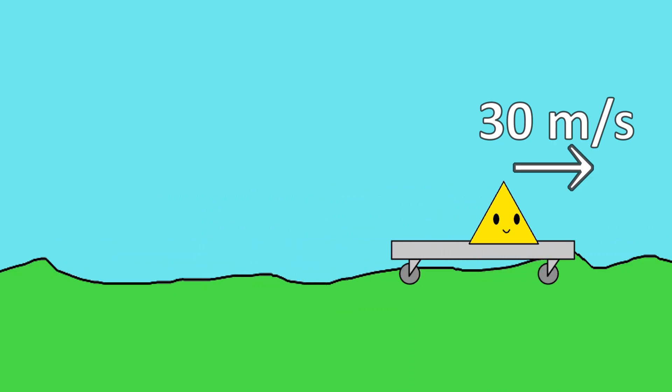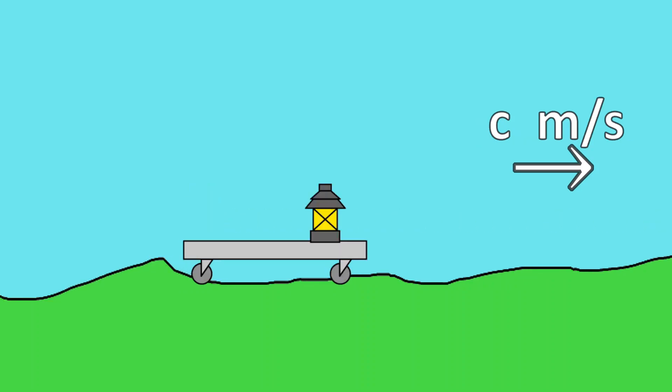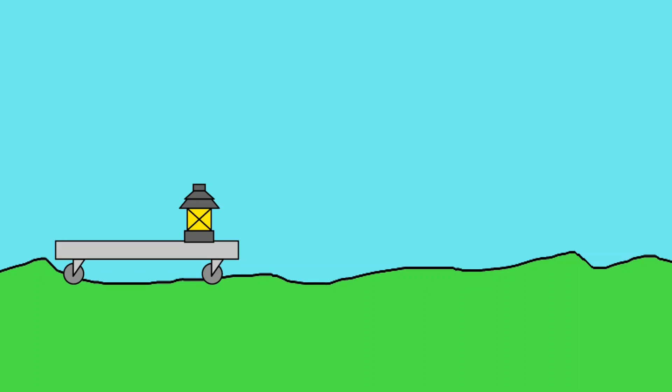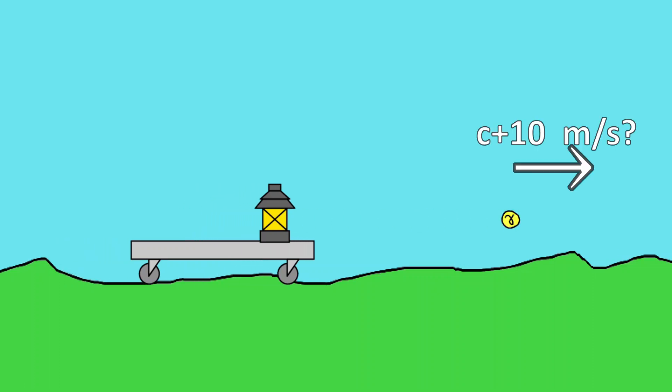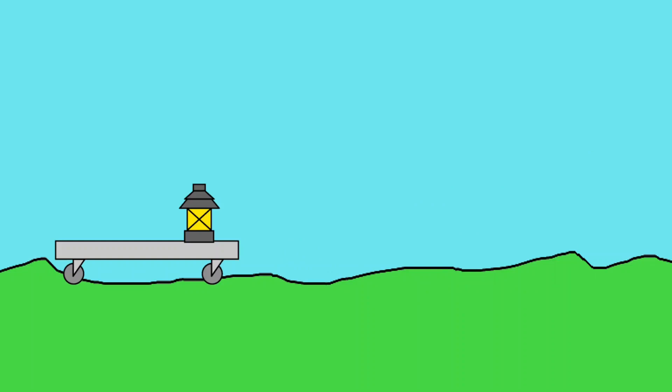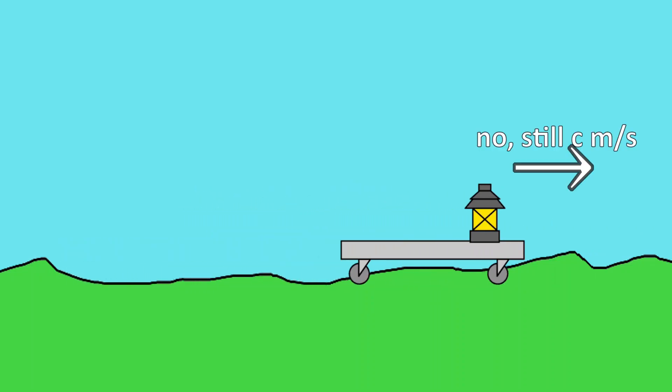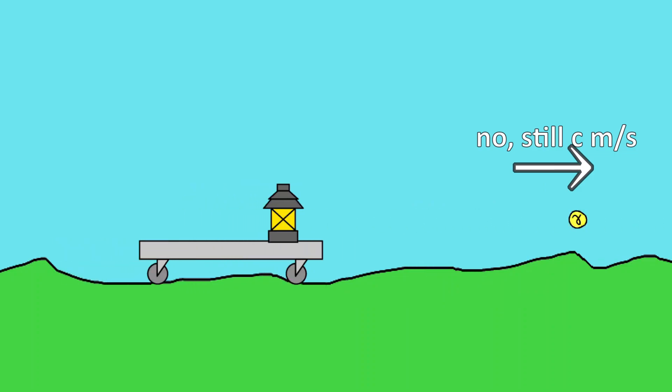But now let's say you replace the projectile throwing person with a lantern. Instead of throwing projectiles, it casts light, which comes in the form of particles called photons, and they travel at the speed of light, or C. From the lantern's perspective, the photons move at speed C, therefore you would expect to see them move at speed C plus 10, but no, even from your perspective they still move at speed C. This fact seems ridiculous, but there's plenty of experimental evidence to back it up.